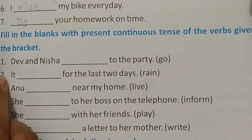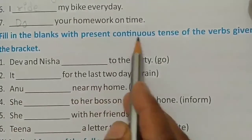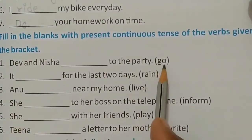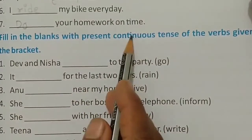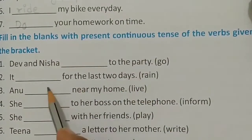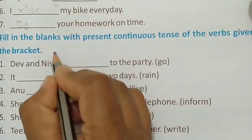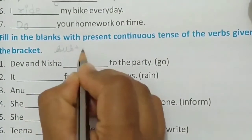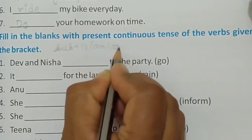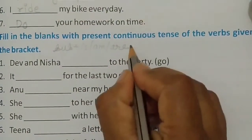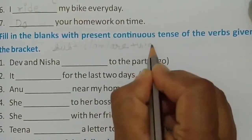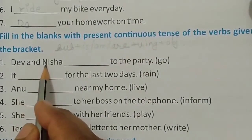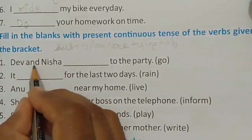Now students, question number two: fill in the blanks with the present continuous tense of the verbs given in the bracket. The verb is given in brackets; you have to fill in these blanks with the help of present continuous tense. The structure of present continuous tense is: subject plus is/am/are plus V1 in its ING form plus object.